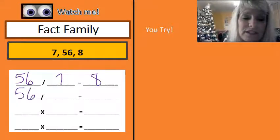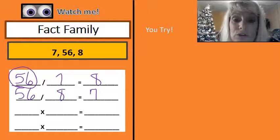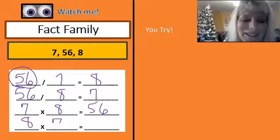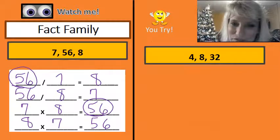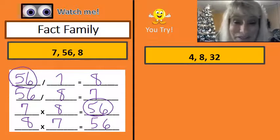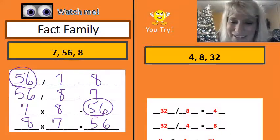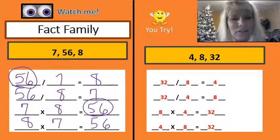And 56 divided by eight is seven. It doesn't matter which order you put it in, but it is important that the first number be your largest number. The next one is seven times eight is 56. And eight times seven is 56. Again, it doesn't matter which order it is, but the big number has to be at the back. Time for you to give this one a try — go ahead and write a fact family for this and then come on back and we'll check. Did you get 32 divided by eight is four? 32 divided by four is eight. Eight times four is 32. And four times eight is 32.